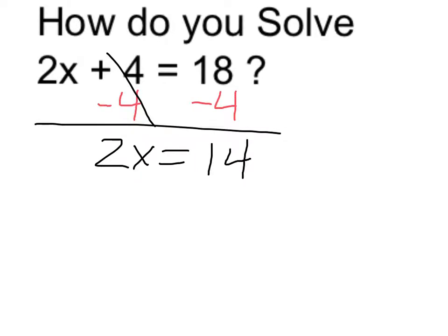So I have 2 times some number is equal to 14. To algebraically solve for that number, I'm going to undo the multiplication by dividing each side by 2. 2 divided by 2 cancels out. That's just equal to 1, and 1 times x is x. I have to do the same to the other side. 14 divided by 2 is 7.